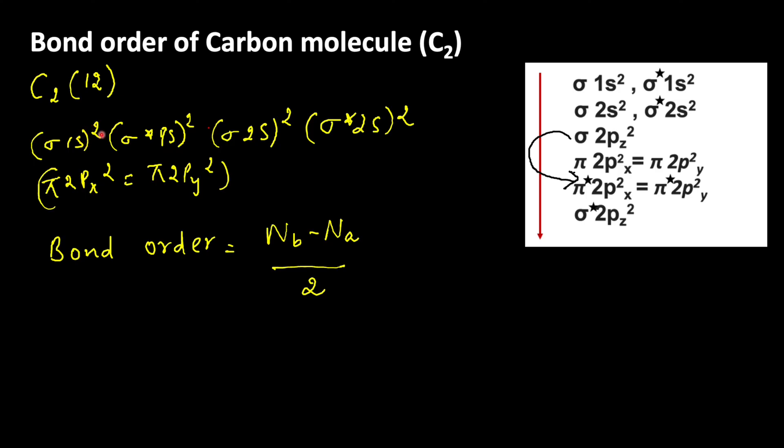The electrons which are present in sigma 1s, sigma 2s and pi 2px and pi 2py orbitals are called bonding electrons. The electrons which are present in sigma star 1s and sigma star 2s are called anti-bonding electrons.